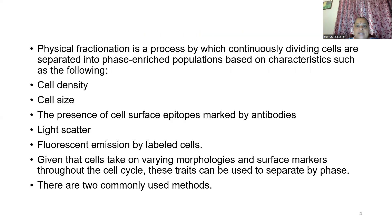In physical fractionation, there is a process of continuously dividing cells, and they can be separated based on characters like cell density, cell size, and the presence of cell surface epitopes that can be marked by antibodies. Using light scatter and fluorescent emissions, we can label the cells and identify morphological and surface markers, separating cells by different phases of the cell cycle.